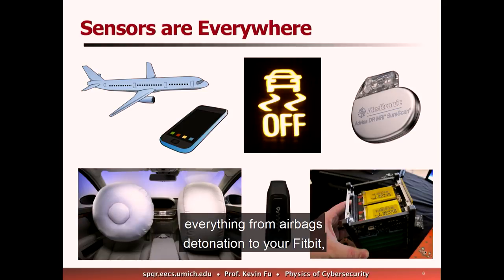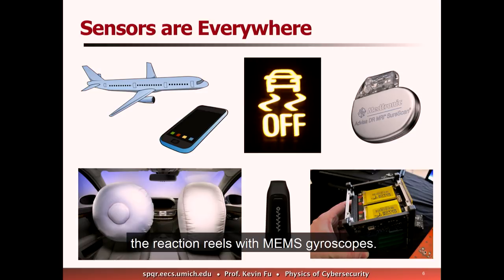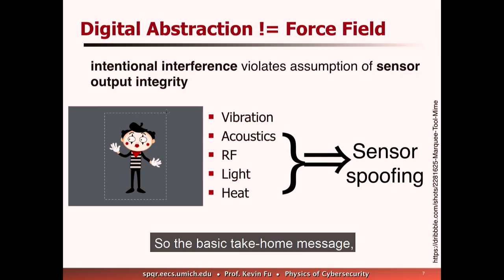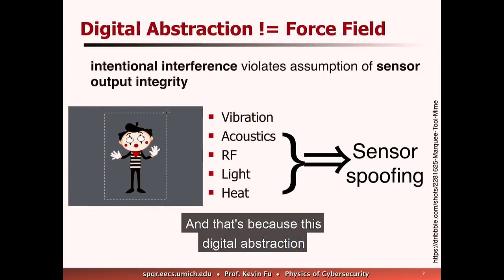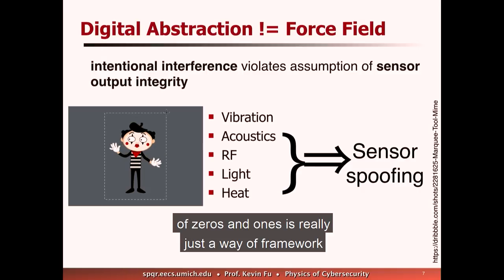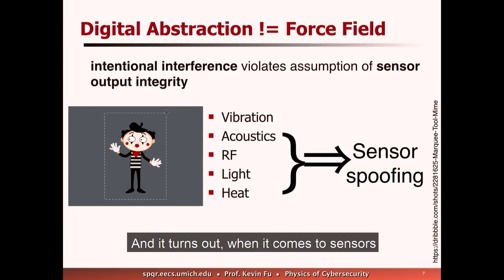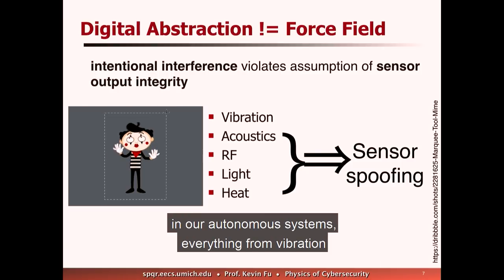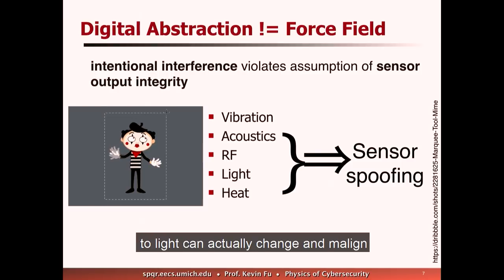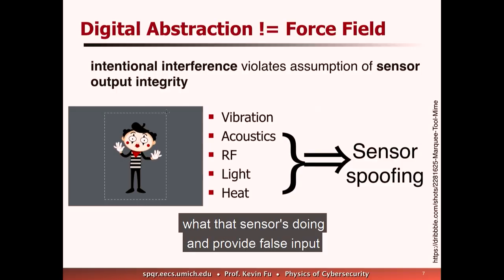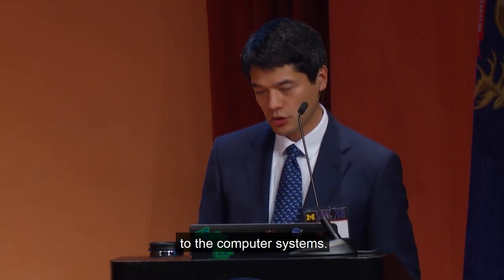These sensors are everywhere — everything from airbags and detonation, to your Fitbit, to even CubeSats in space that are replacing reaction wheels with MEMS gyroscopes. The basic take-home message: if you're living in the digital world, you're living in a false world. That's because this digital abstraction of zeros and ones is just a framework for us to think about the complicated physics going on inside the computer. When it comes to sensors in our autonomous systems, everything from vibration to light can actually change and malign what that sensor's doing and provide false input to the computer systems.